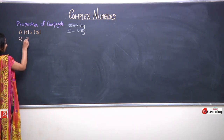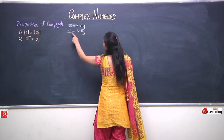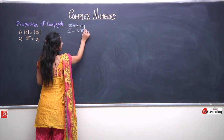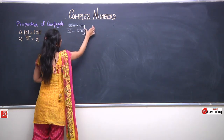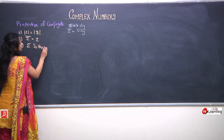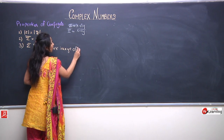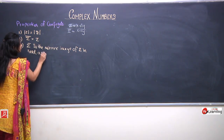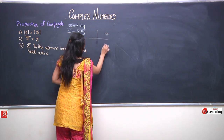The second property is that the conjugate of the conjugate of z equals z. We know z̄ = x − iy, so the conjugate of z̄ is the conjugate of (x − iy) = x + iy = z. The third property is that z̄ is the mirror image of z in the real axis, which we already proved when we plotted z on the complex plane.